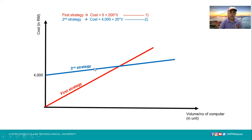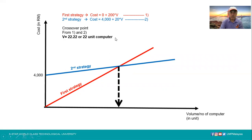We draw the second strategy as the blue line on the chart. From these two lines, we have a crossover point. This crossover point serves as the border between the number of computers. We can calculate it from equations one and two, giving us 22.22, or approximately 22 unit computers.